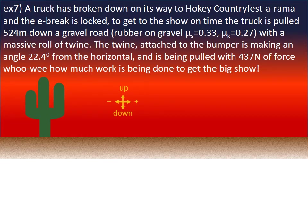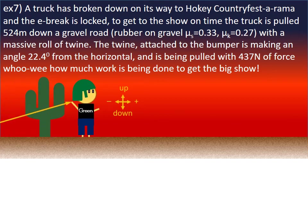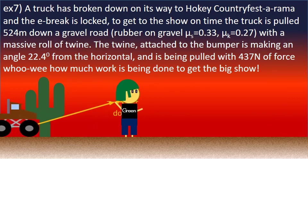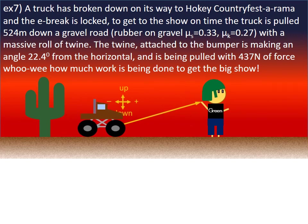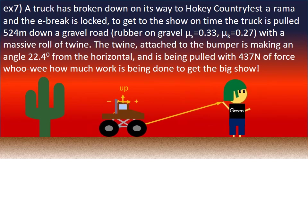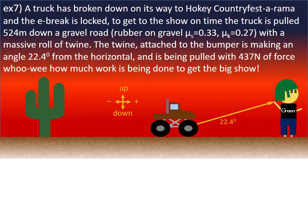Example 7: A truck has broken down on its way to Hokie Country Festorama. The e-brake is locked. To get to the show on time, the truck is pulled 524 metres down a gravel road with a massive roll of twine. The twine attached to the bumper is making an angle of 22.4 degrees from the horizontal, and it's being pulled with 437 newtons of force. How much work is being done?